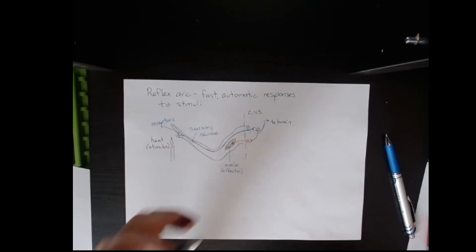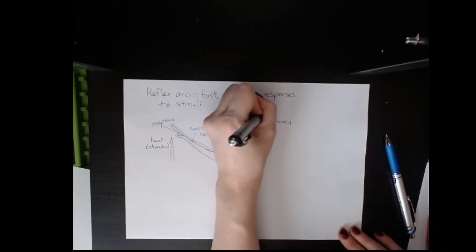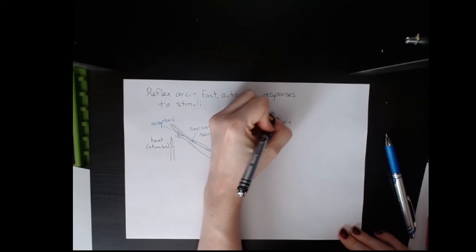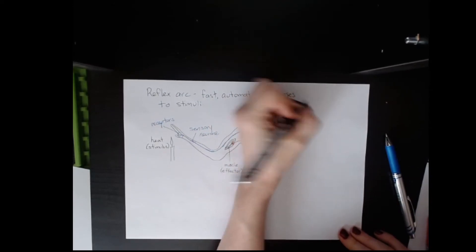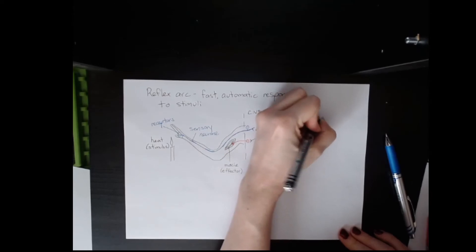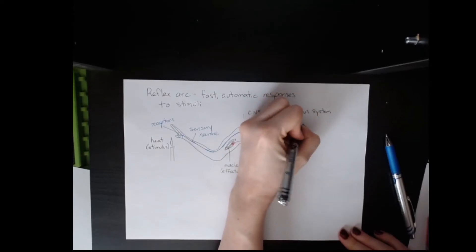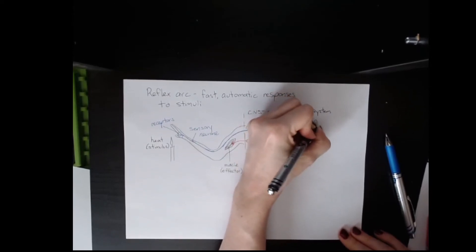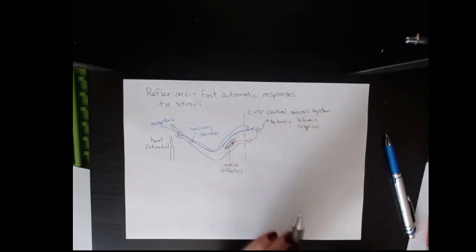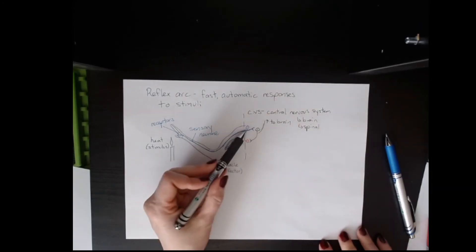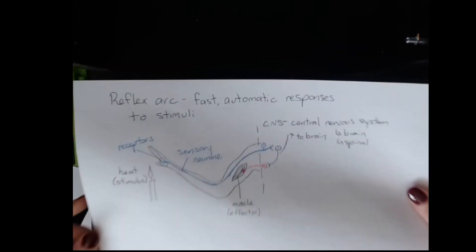I realize that your spine isn't actually located here on your shoulder - again forgive the drawing. But basically the CNS is the central nervous system and there are two parts to it: there is the spinal cord and there is the brain. The CNS consists of the brain and the spinal cord.